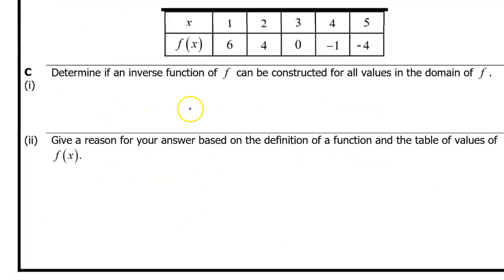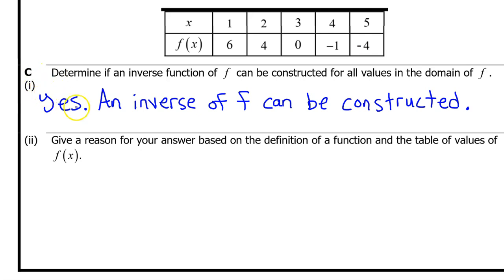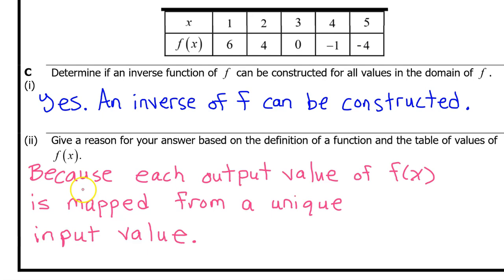Before ending, here's what the answer would look like if an inverse could be constructed. If the output value of 4 is changed to negative 4, all output values are different and none repeat, so an inverse can be constructed. For C part 1 you say yes. For C part 2, the required wording is: 'because each output value of f of x is mapped from a unique input value.' When the answer is yes, you don't need to provide examples.